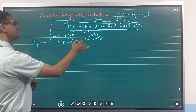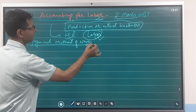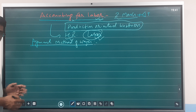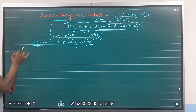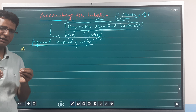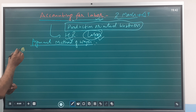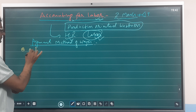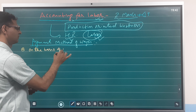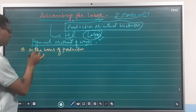Now let's look at the payment method of wages. In the manufacturing or production industry, wages can be paid on different bases. One important method is the piece rate system, which is based on production output.